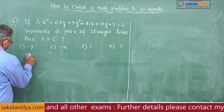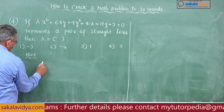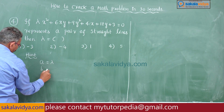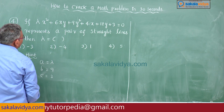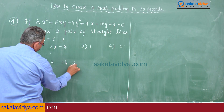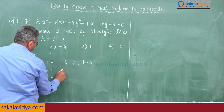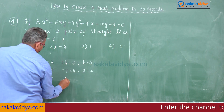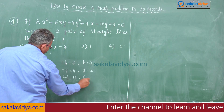Now we get the a, b, c, f, g, h values. Here a is λ, b is 9 (x² coefficient), and c is 3 (constant). The xy coefficient gives 2h = 6, so h = 3. Also, 2g = 4, so g = 2, and 2f = 12, so f = 6.